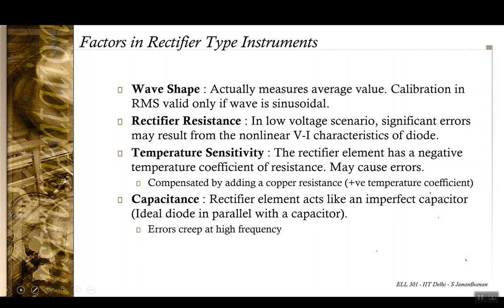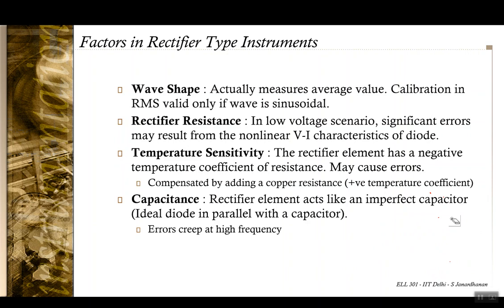The fourth factor is frequency. A practical diode can be modeled as an ideal diode in parallel with a capacitor. At low frequencies this behaves like a diode, but as frequency increases the capacitor impedance decreases, causing errors. For high-frequency measurements, appropriate compensation is needed or errors should be expected.